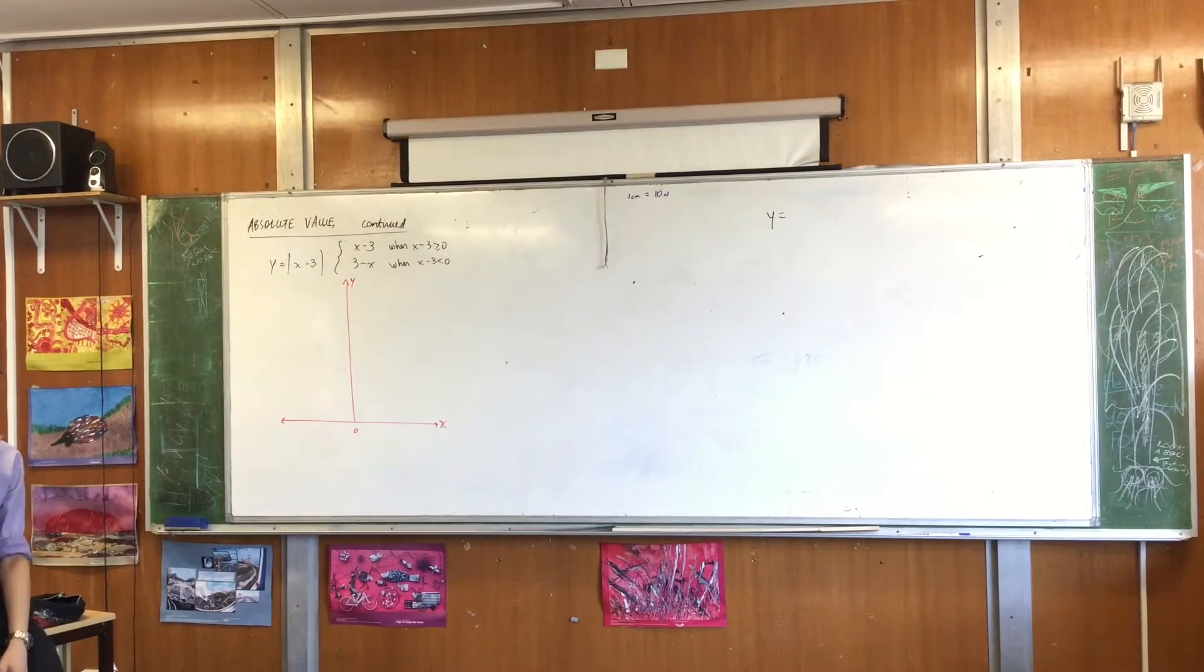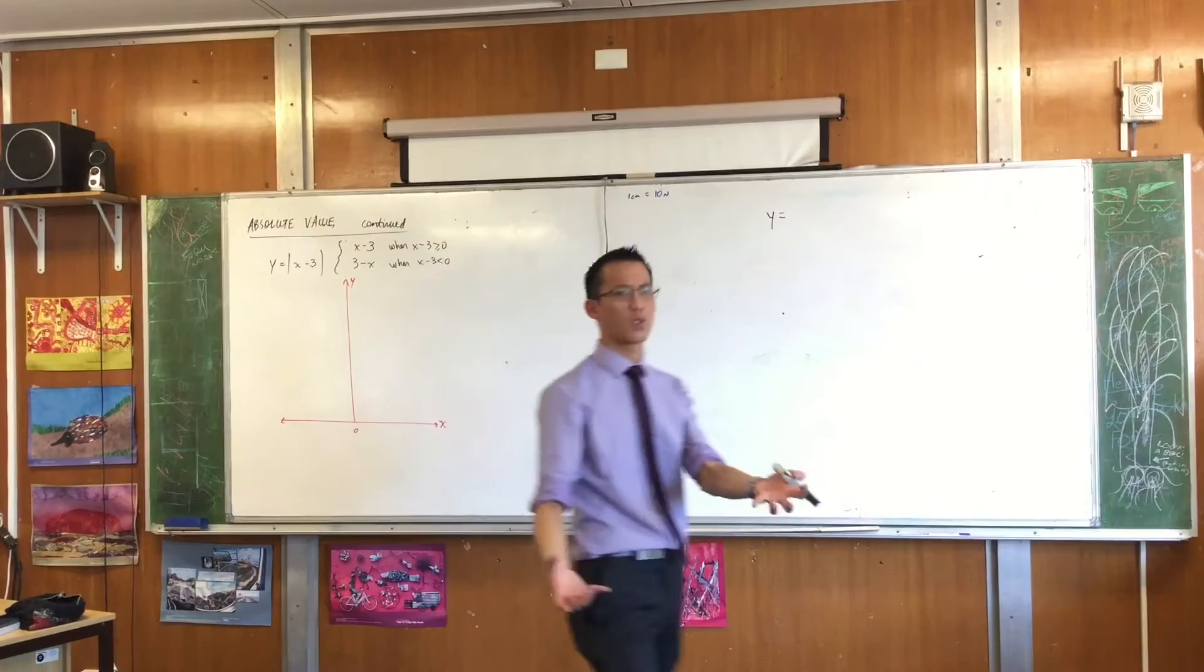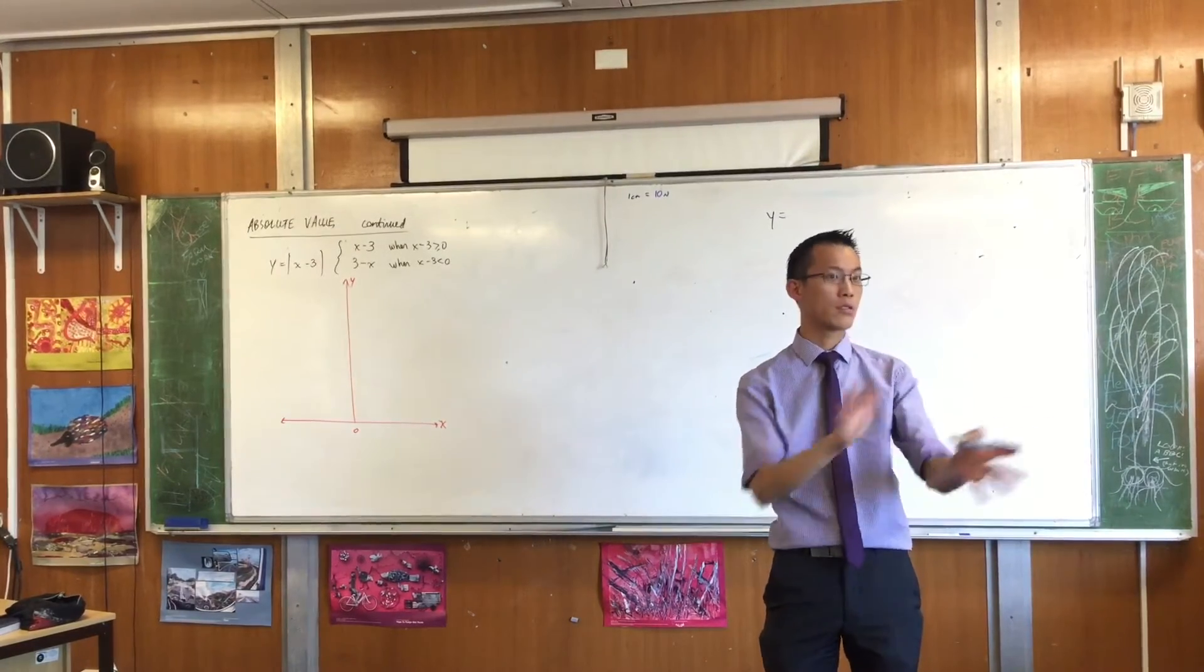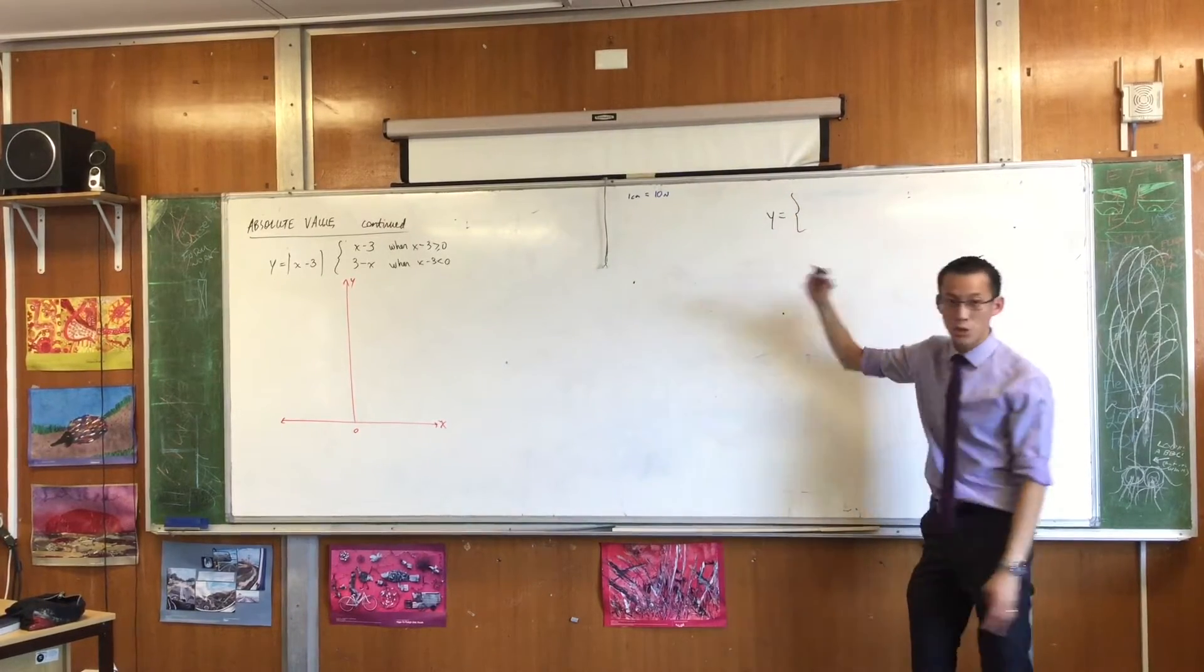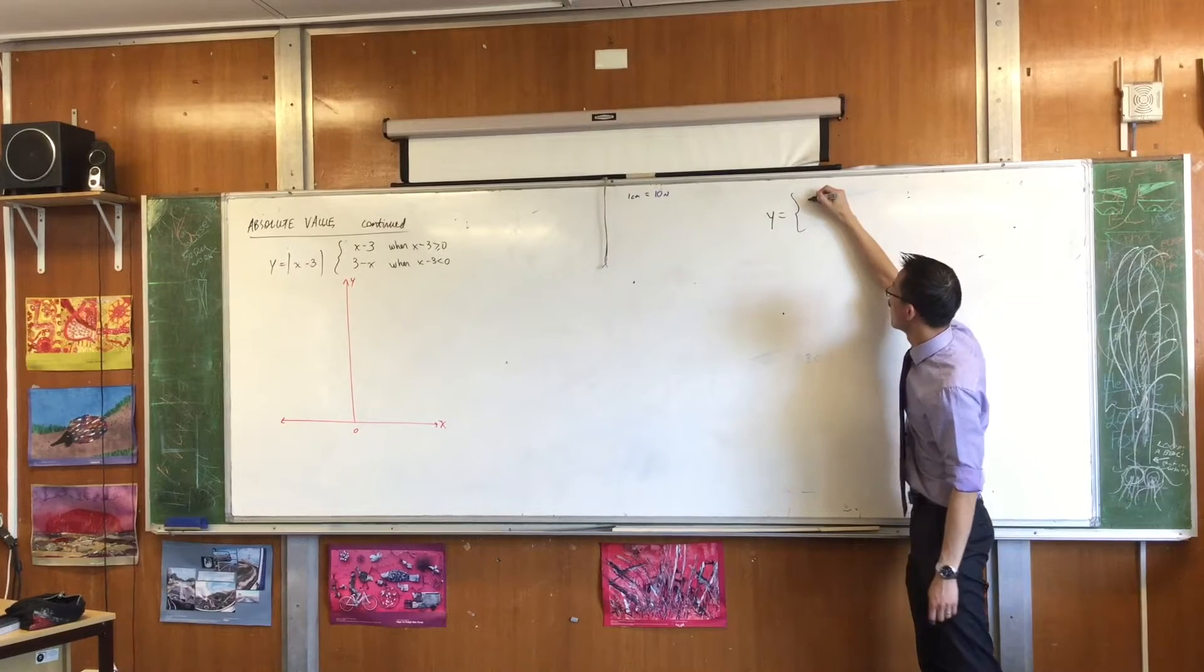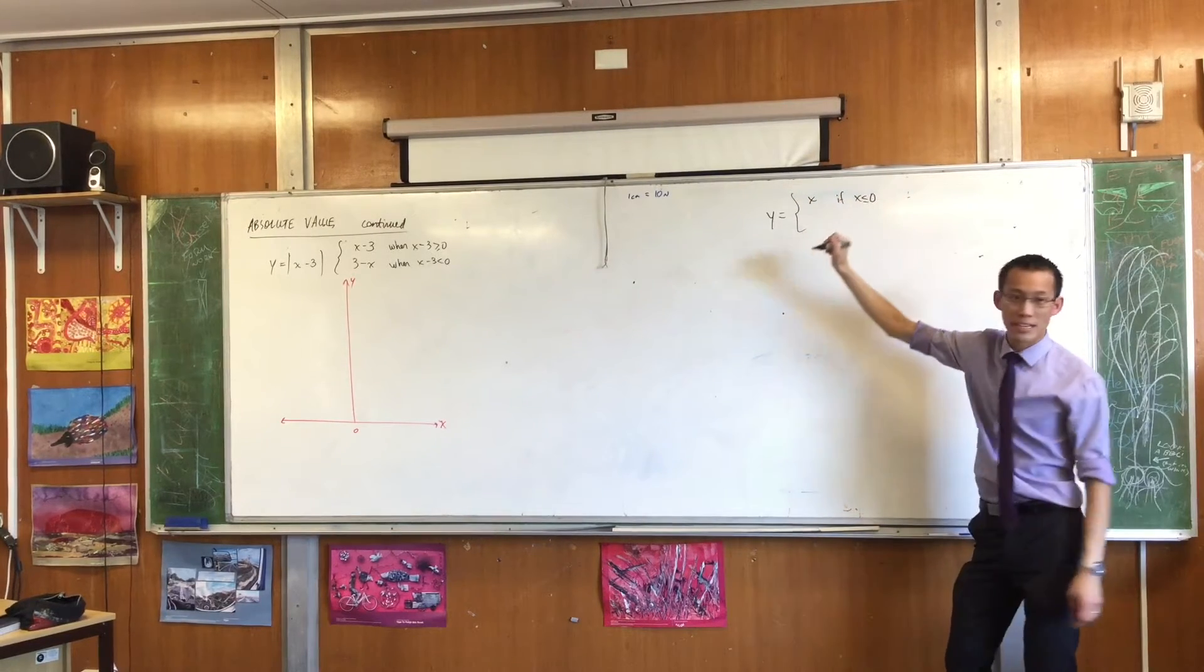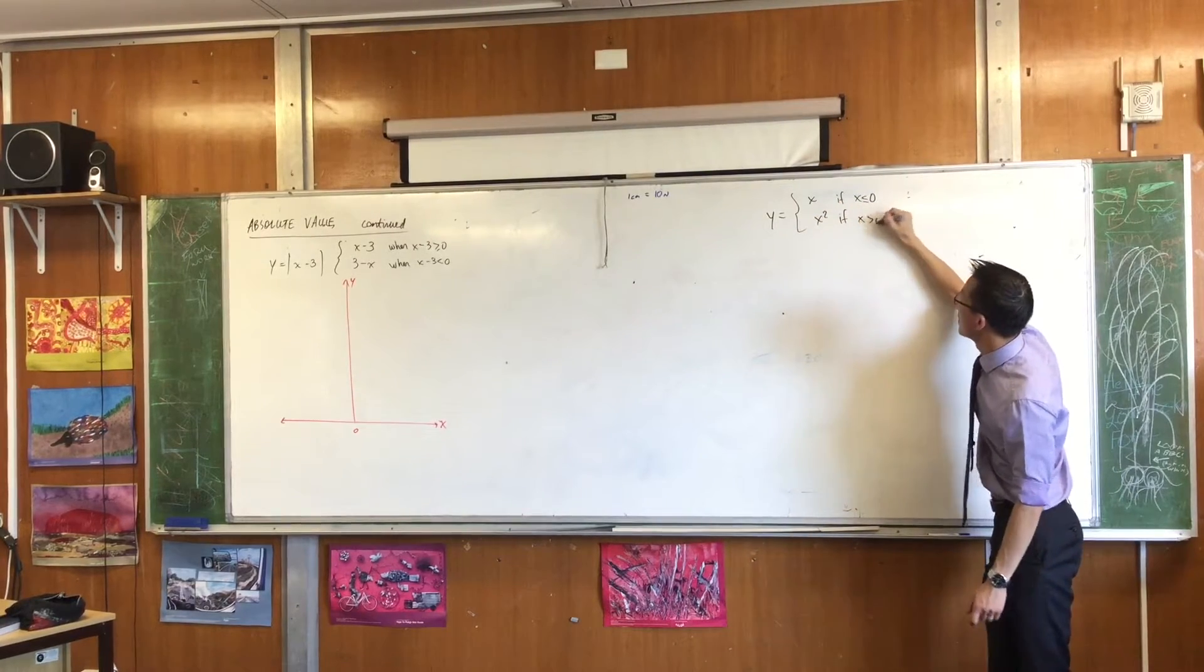But some things in reality, in nature, in artificial systems, they don't just follow one function, not just 2x minus 4, not just x squared minus 1. But sometimes they do this, sometimes they do that. So as an example, I could say y equals two different things: x if x is less than or equal to 0, and x squared if x is positive.